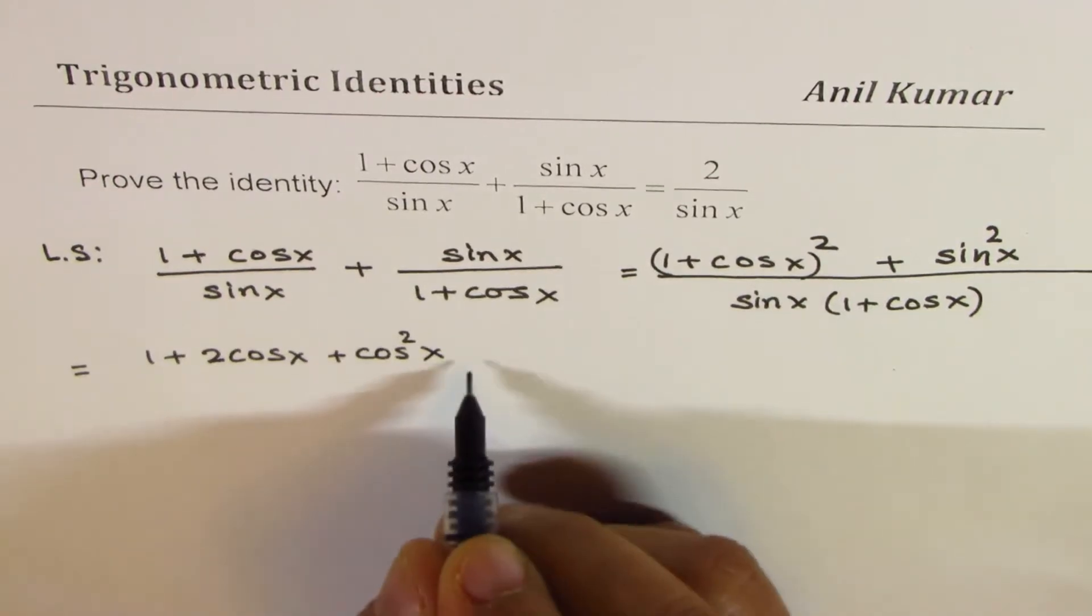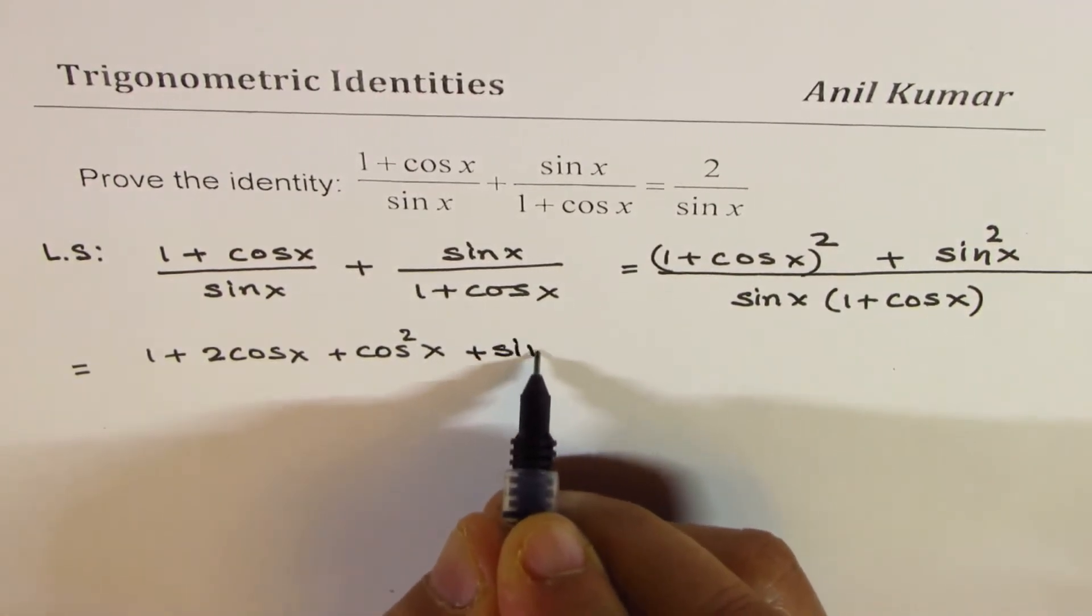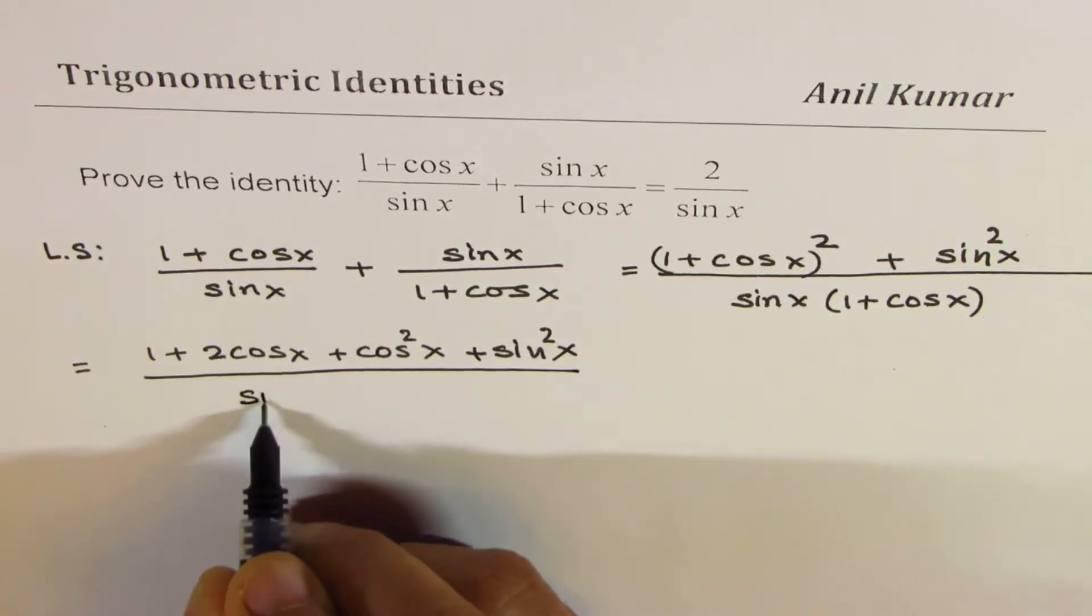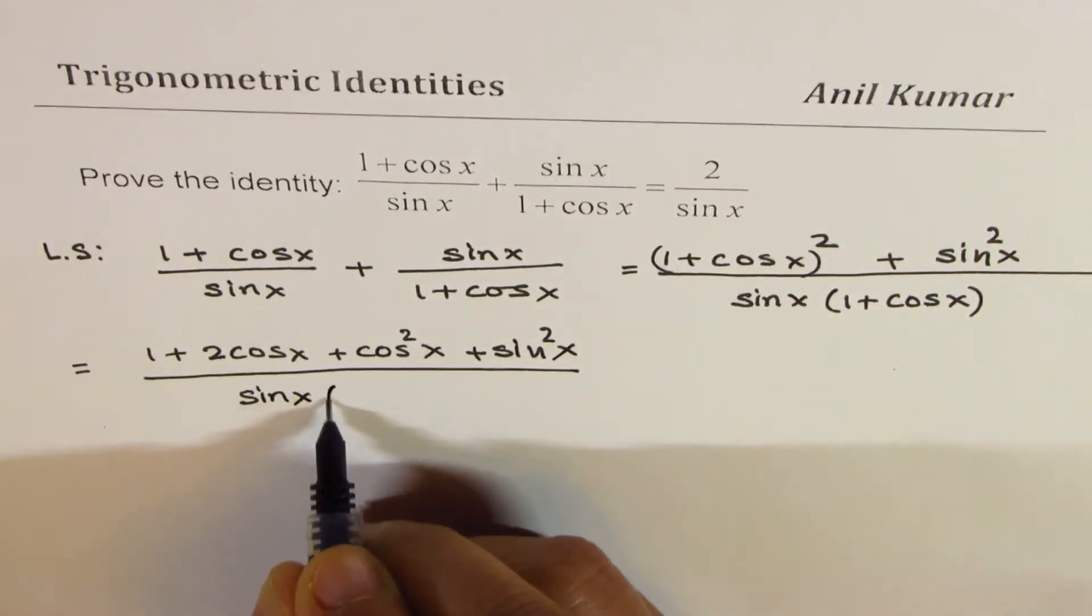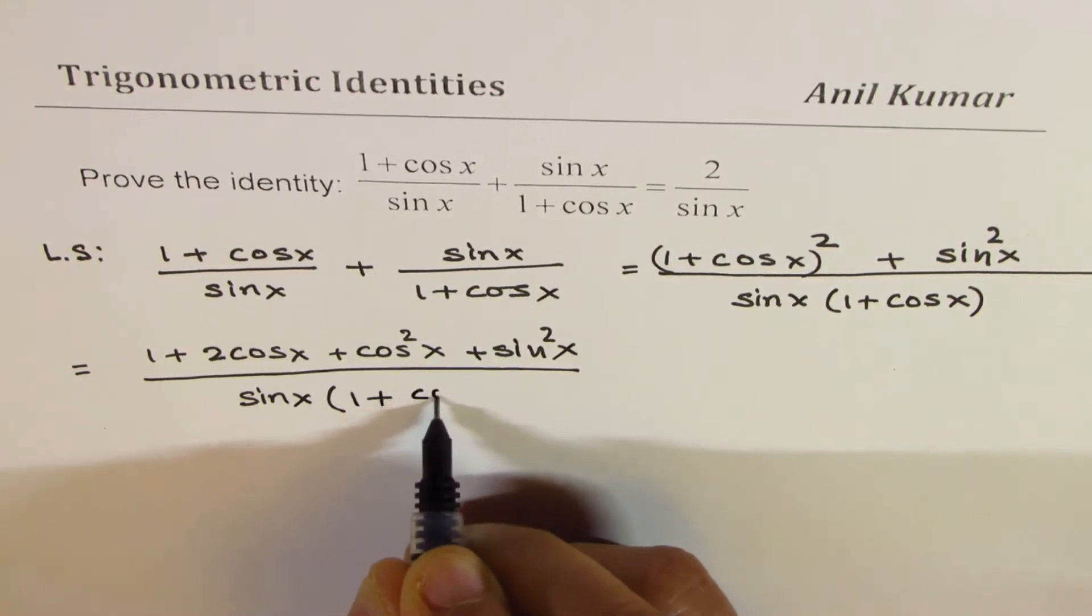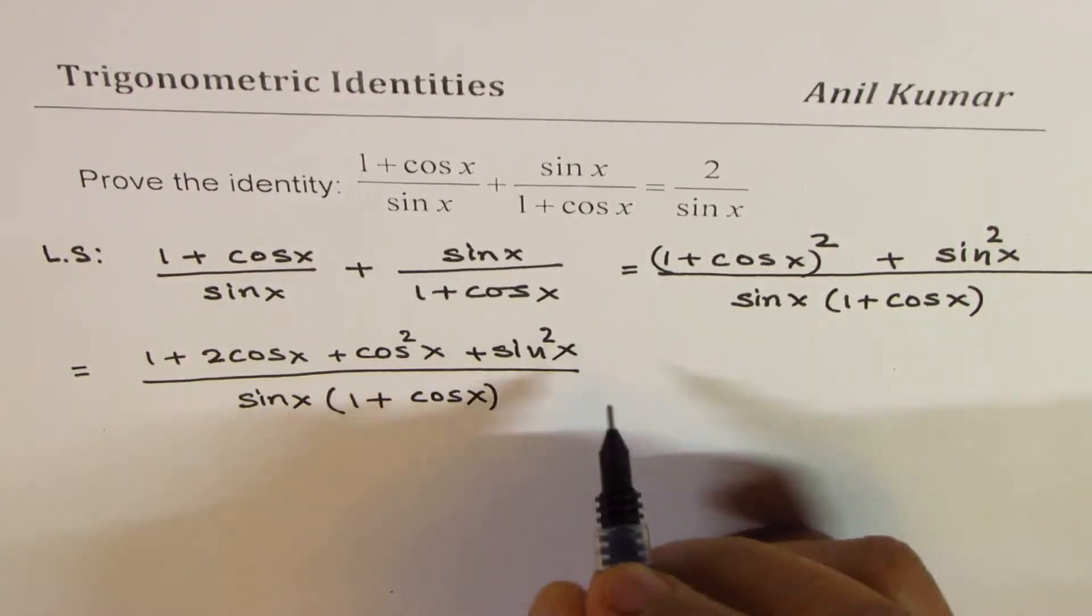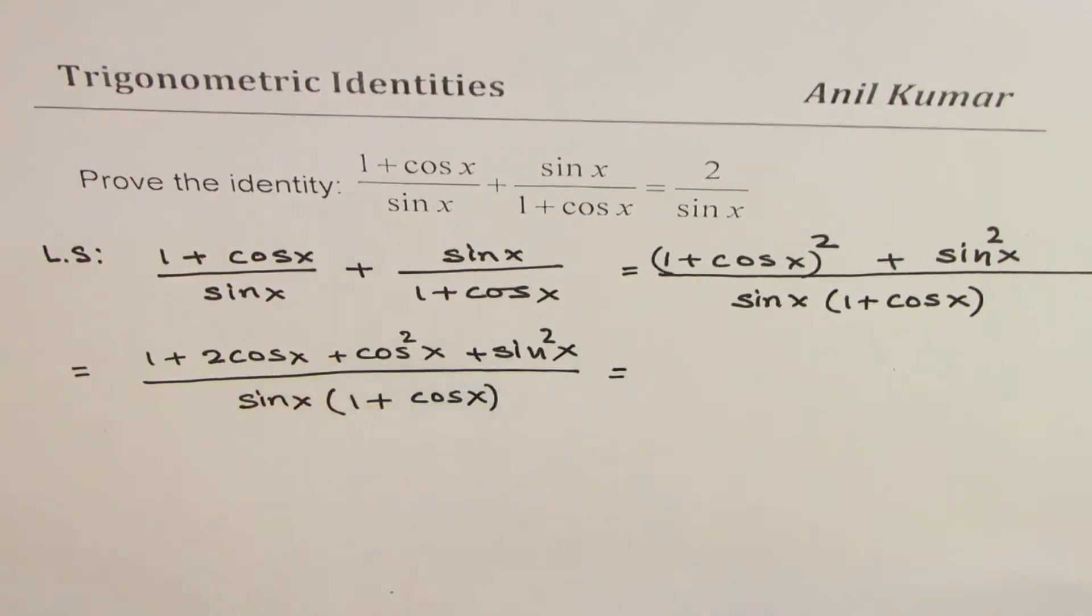And we already have plus sin square x there divided by sin x times 1 plus cos x. Now, cos square x plus sin square x can be combined. This is equal to 1.